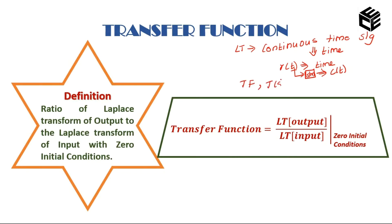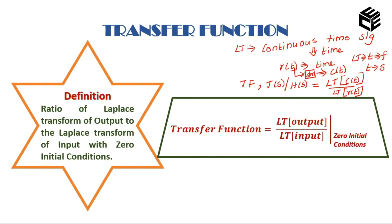The transfer function is represented as T(s) or H(s). H(s) is equal to the Laplace transform of output c(t) divided by the Laplace transform of input r(t). The Laplace transform converts a time domain signal to a frequency domain signal — that is, t is converted to s. So the Laplace transform of c(t) is C(s) and the Laplace transform of r(t) is R(s).